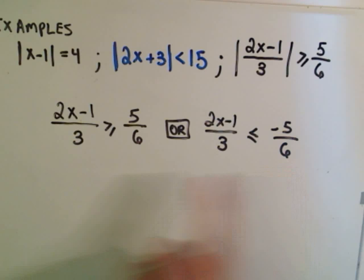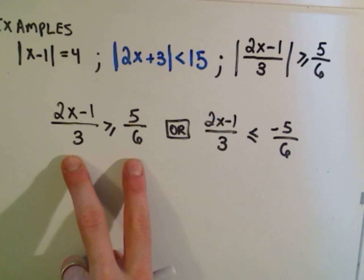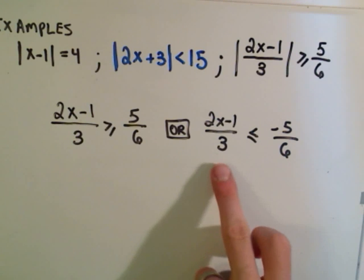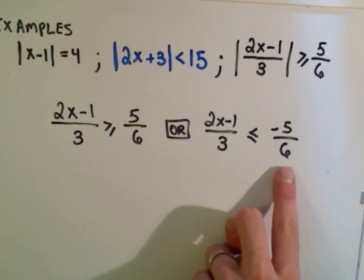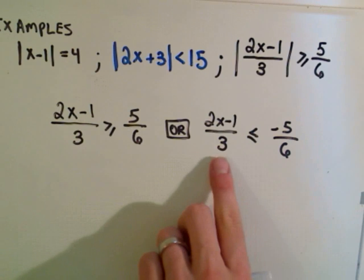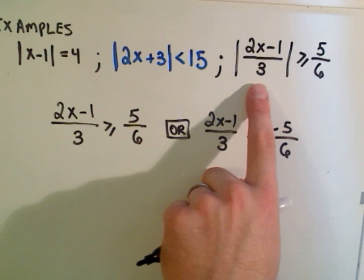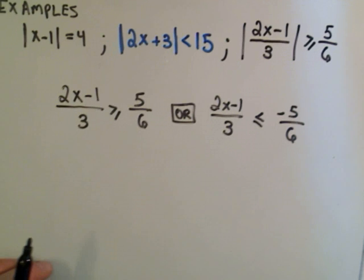This makes sense. The first one's intuitively clear. The second one makes sense. If I can make the thing on the left less than or equal to negative 5/6, maybe I make the left side negative 20, for example. The absolute value of negative 20 will be positive 20 and will satisfy my inequality.